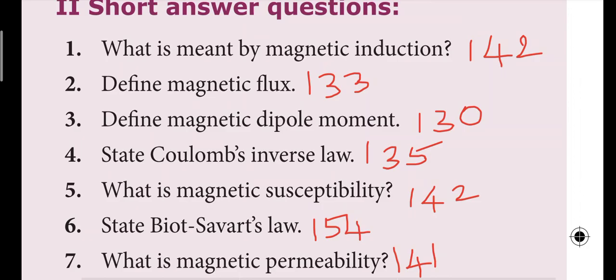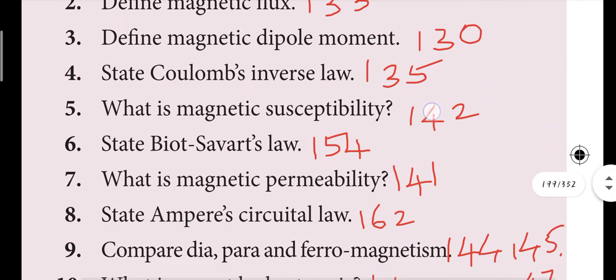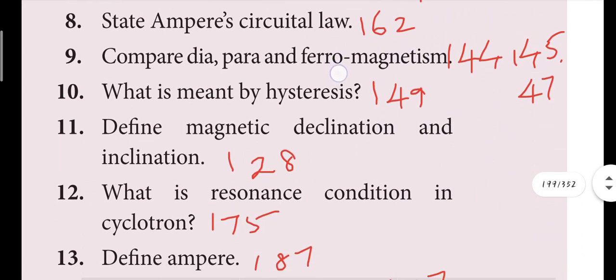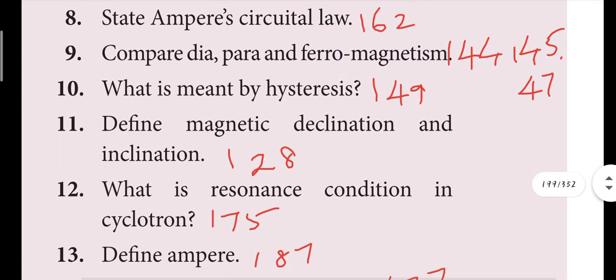Fifth question: magnetic susceptibility — page 142. Sixth question: Bio-Savart law — 154. Important three mark and two mark questions. Seventh question: magnetic permeability — 141. Eighth question: Ampere's circuit law — 162.